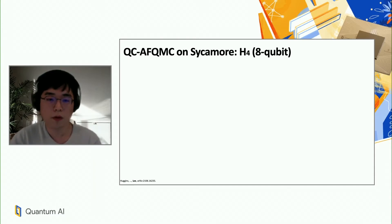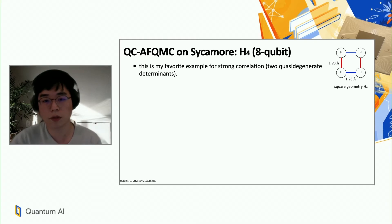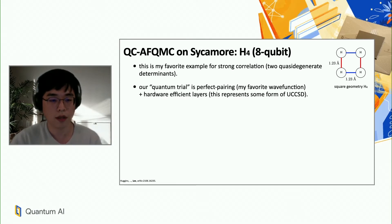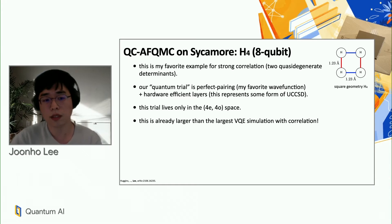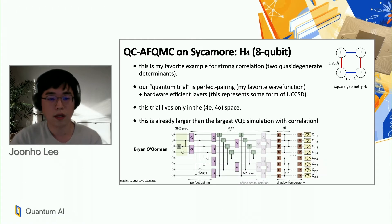Just to give you some flavor of how well these actually work, I brought an example H4 here, which involves up to 8 qubit. So it's a square geometry of four hydrogen atoms. This is my favorite example for strong correlation, mainly because it's very simple. There are two quasi degenerate determinants. It's just a fancy way of saying your favorite mean field approach is going to fail for this chemical system. Our quantum trial has perfect pairing and then some layers of hardware efficient operators. This just represents some form of unitary coupled cluster wave function as I showed you before, some complicated wave function. And this wave function lives only within the four electron four orbital space or eight qubit space. This is already larger than the largest VQE simulation with correlation, so this is a big calculation for near-term applications.